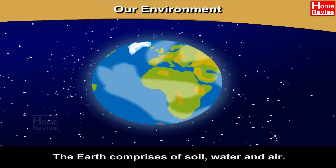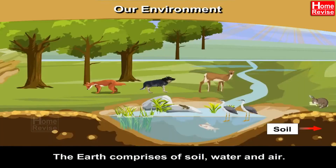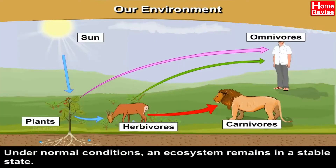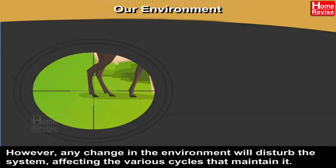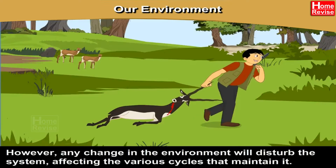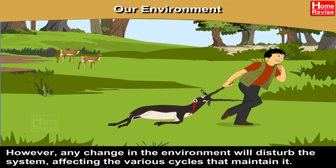The earth comprises soil, water, and air. These are the non-living or abiotic components which provide sustenance to different kinds of living forms. Under normal conditions, an ecosystem remains in a stable state. However, any change in the environment will disturb the system, affecting the various cycles that maintain it.